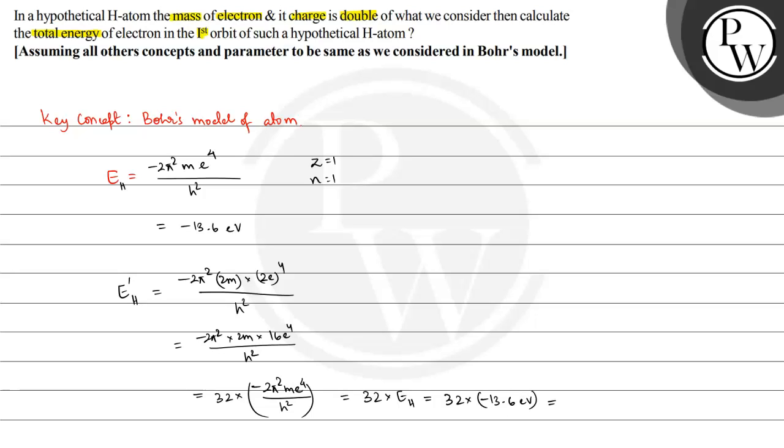minus 435.2 electron volts. So this is the energy of the hypothetical hydrogen atom with doubled mass and doubled charge of electron. This is the required answer. I hope you understood the concept well. Best of luck!